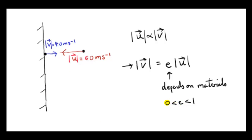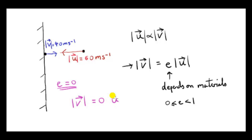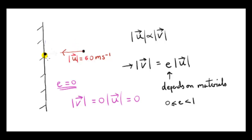Let's consider extreme values for e. e could equal 0, although it's never equal to 1 — though we can make it very close to 1. In the situation where e is 0, the final speed immediately after impact is 0 times the speed just before impact, which is zero. The particle doesn't rebound from the wall — it just sticks to the wall. Its final speed is 0.